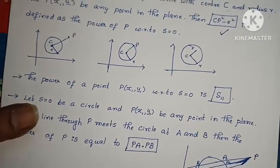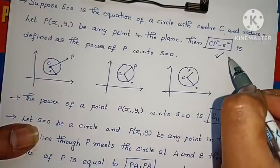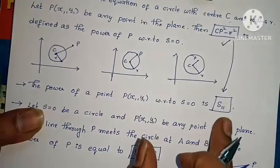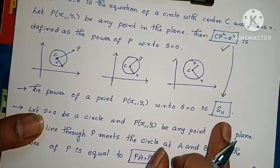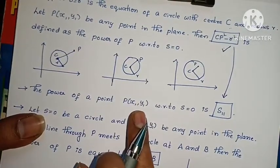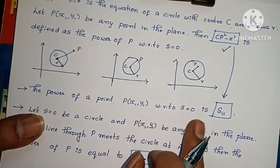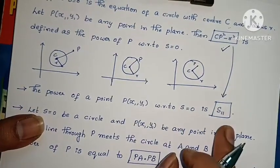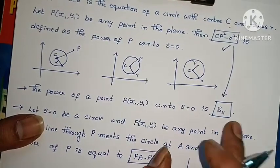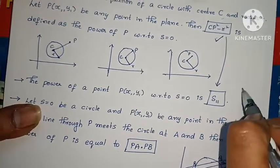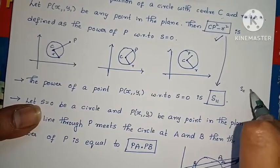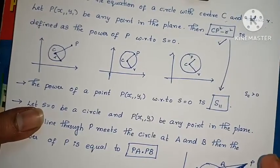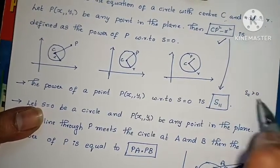Now, a shortcut: CP squared minus R squared equals S11. So the power of point P at (x1, y1) with respect to circle S equals 0 is simply S11. If S11 is greater than 0, the point P lies outside the circle.